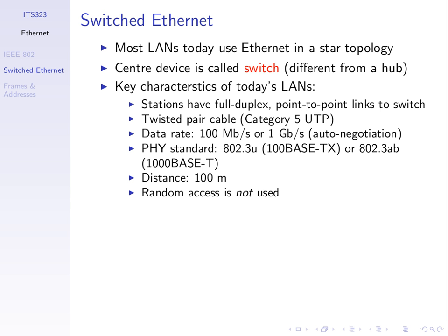The standards for different data rates have different names — some are called 100BASE-TX, 1000BASE-T, where 100 or 1000 indicates the data rate in megabits per second. There are also different variations of cabling used. The typical maximum distance for a link from PC to switch is about 100 meters — you cannot have a cable longer than that. Random access is not used; with point-to-point links the medium is not shared. When my laptop transmits, it's transmitting to the switch and no one else is using that link — it's dedicated, which is very good for performance.